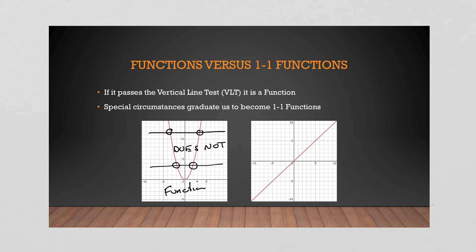But the graph on the right, the diagonal line, well, of course it passes my vertical line test. Of course it passes my vertical line test. So once it passes the vertical line test, you need to ask, does it also then pass the horizontal line test? It needs to pass both tests.